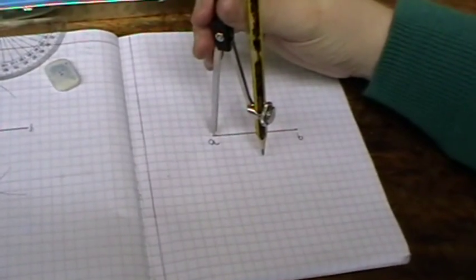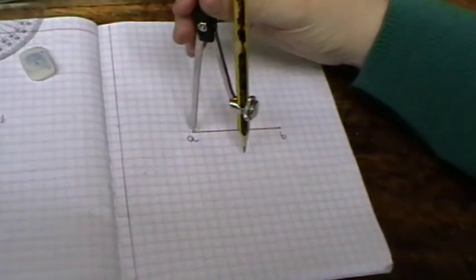Place the point of the compass at A, draw an arc above and below.